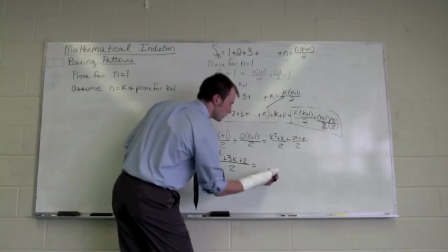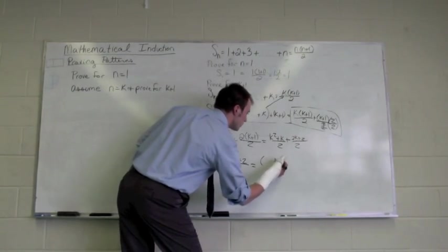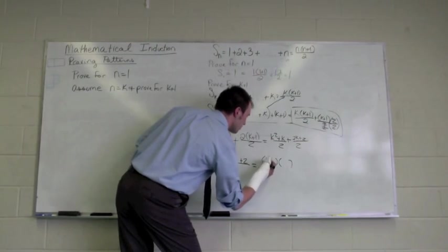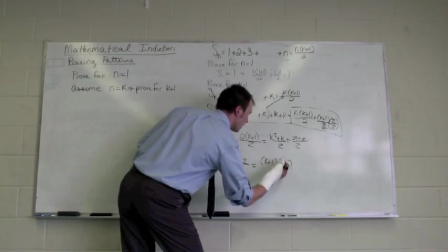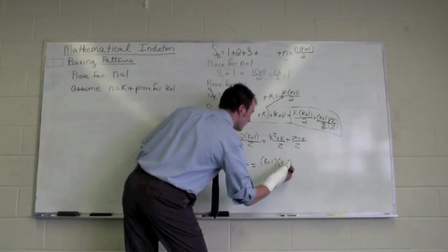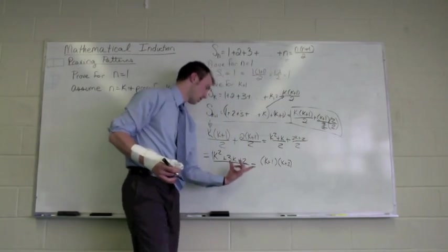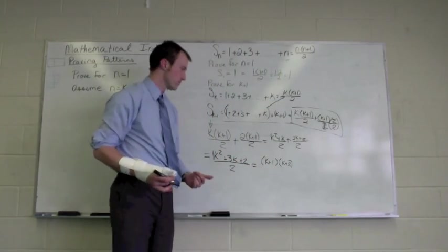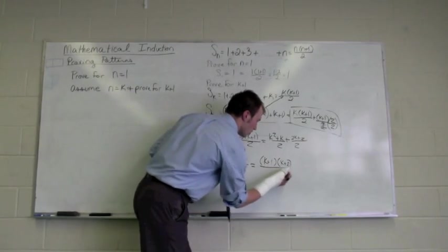So this factors into the two binomials k plus 1 times k plus 2. Again, the 1 and the 2 come from our factoring skills, and this is all divided by 2.